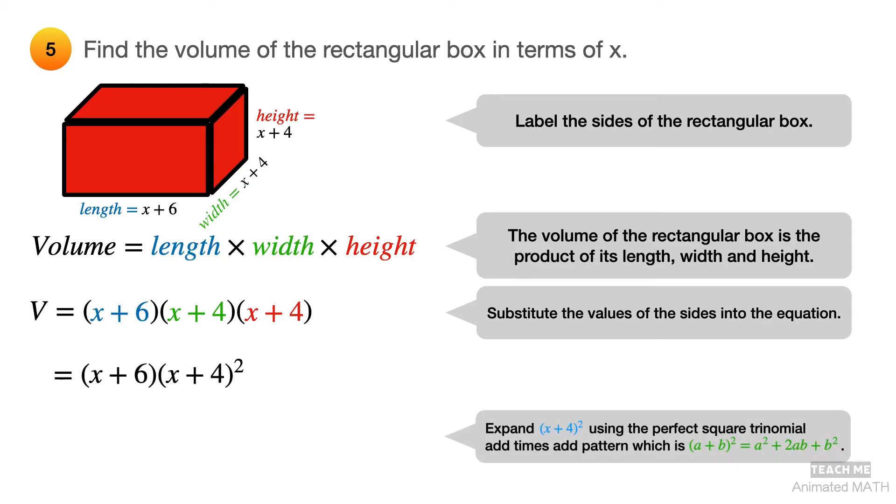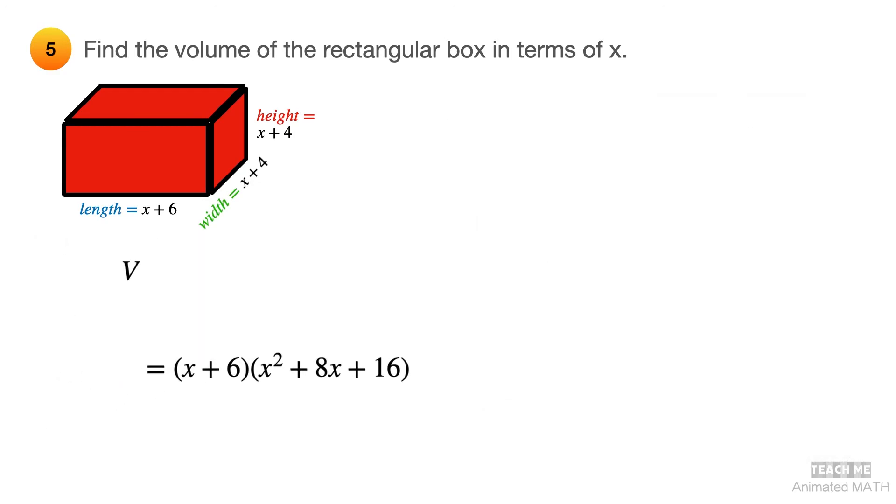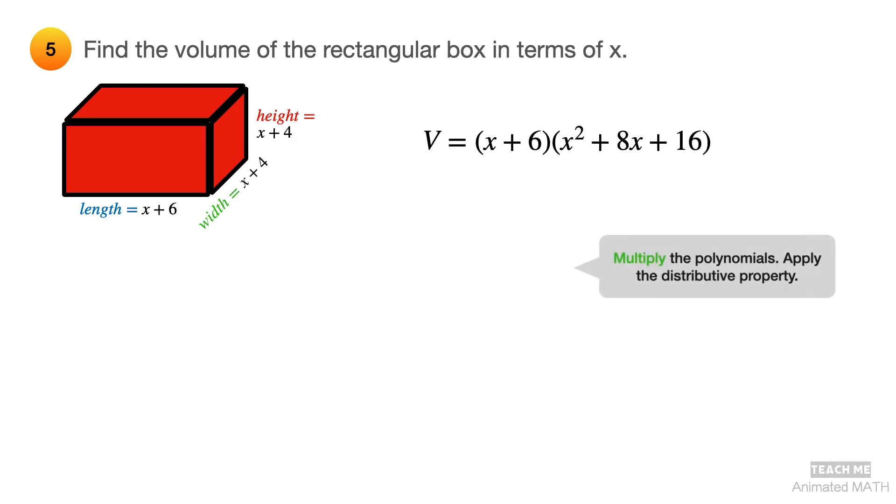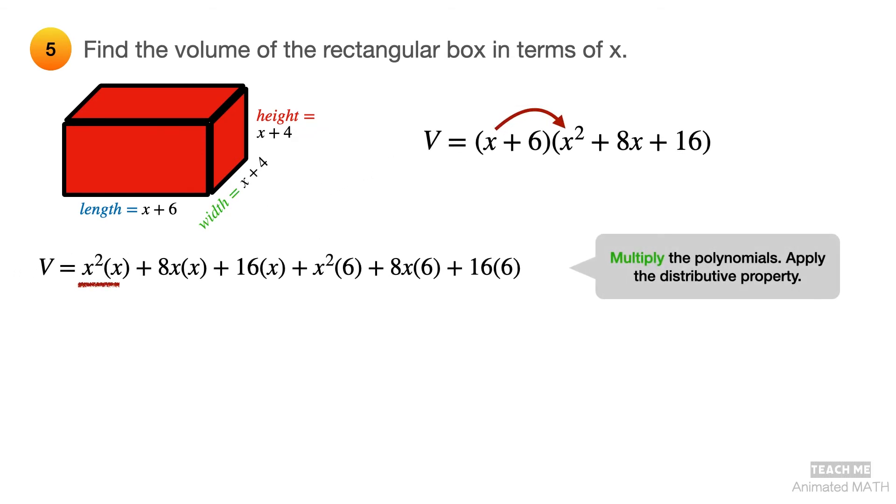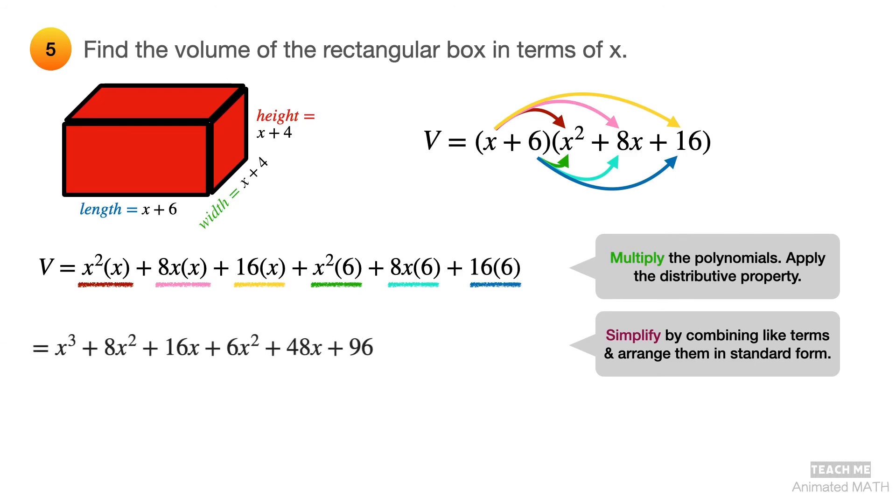You can expand x plus 4 squared using the perfect square trinomial add times add pattern. Apply the distributive property when you multiply the polynomials and expand the equation. Continue simplifying the equation using polynomial addition by combining like terms. And the final answer is x cubed plus 14x squared plus 64x plus 96.